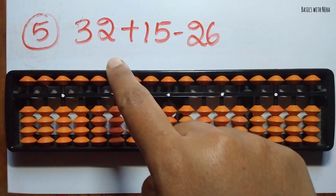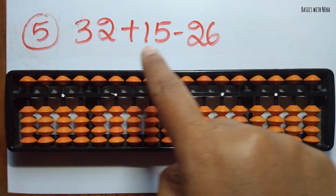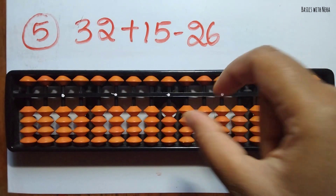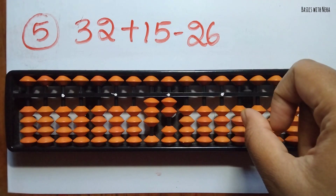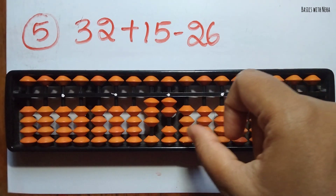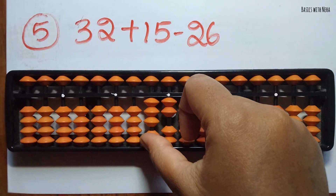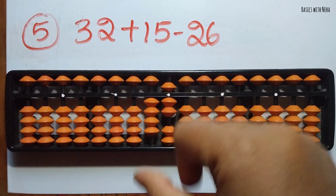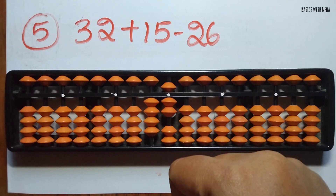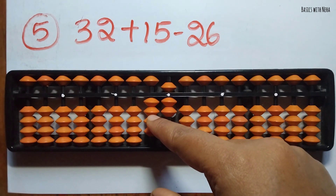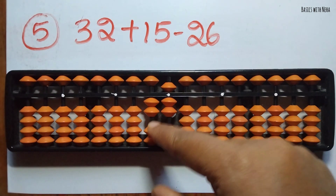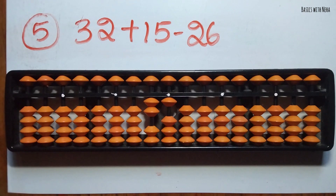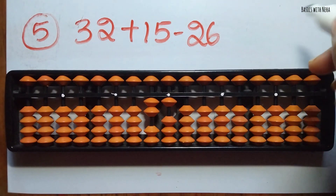The fifth sum: 32 plus 15 minus 26. Now you should add 15 — add 1 in the 10's rod and 5 in the 1's rod. Minus 26 — minus 2 in the 10's rod and minus 6 in the 1's rod. The answer is 21.